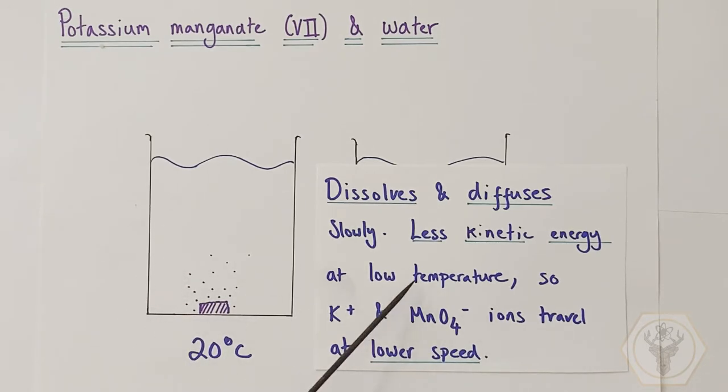That's because at the lower temperature, there is less thermal energy. That means there's less kinetic energy, kinetic energy being the energy of motion. This will slow down the speed of dissolving of the crystal, but also it means that the potassium and manganate ions will be traveling at a lower speed and diffusing through the water at a lower speed. So the appearance of the water would turn more purple much more slowly over time.